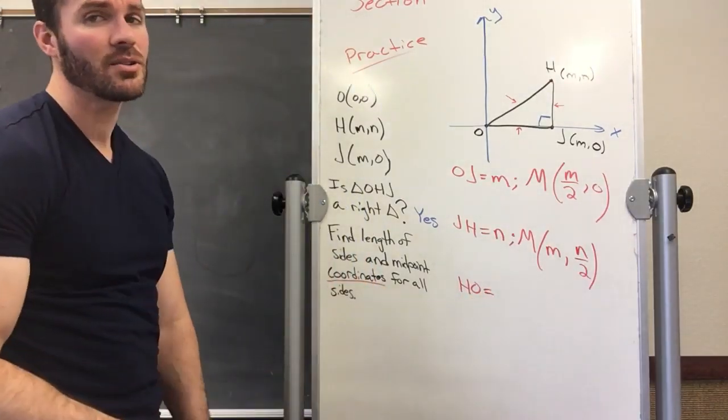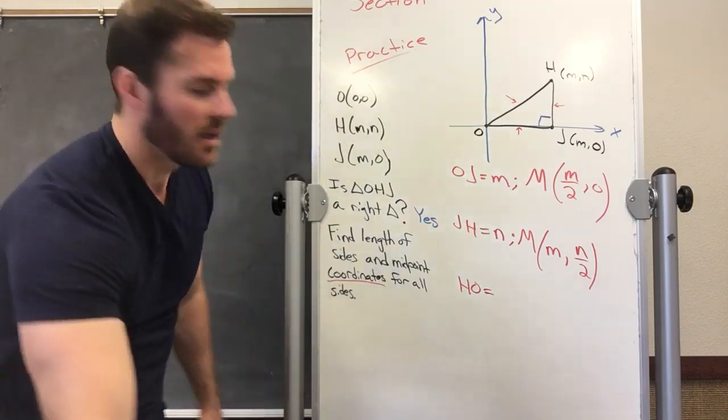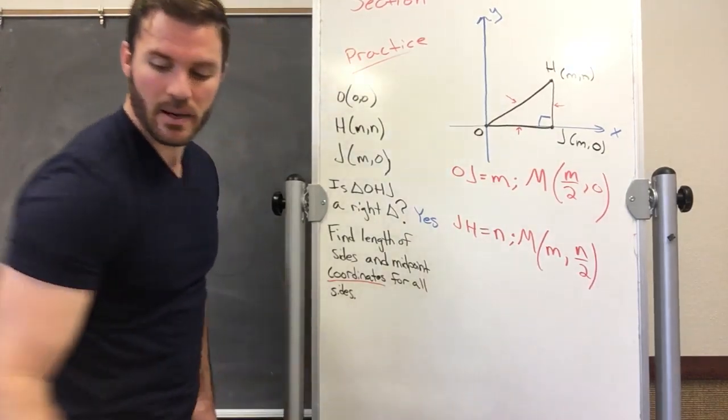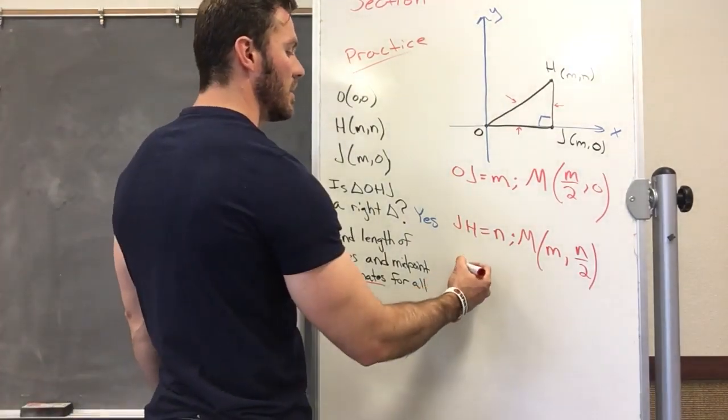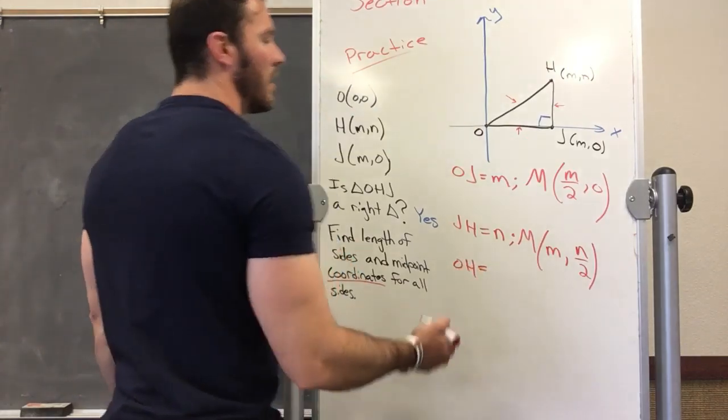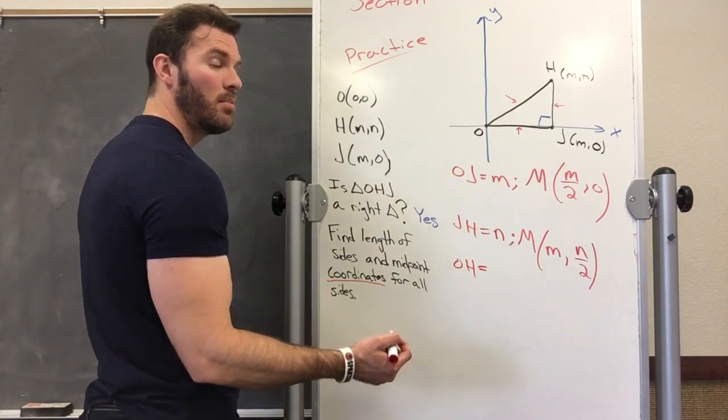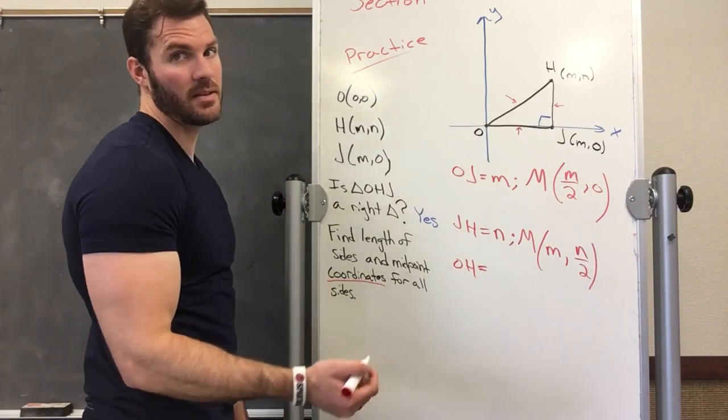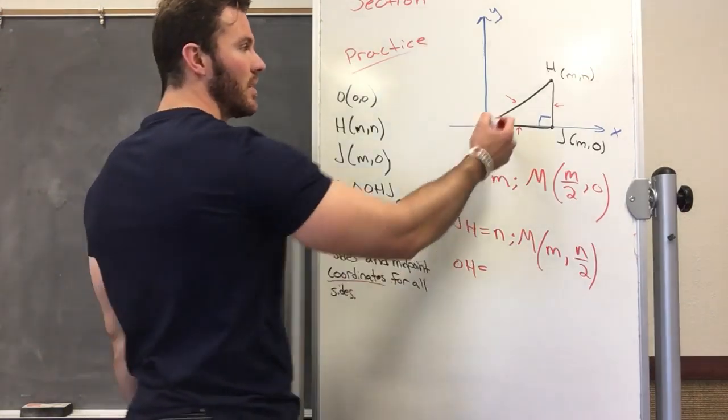Now HO—or let's call it OH—is gonna be a little bit different. We're actually gonna have to use the midpoint formula and the distance formula. If we need to find the length of this, we need to do the distance formula.